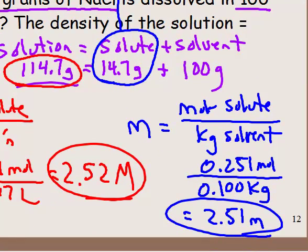Sometimes the molarity and the molality are going to be quite close — it depends on the moles, the volume, and how close the density is to 1. But there it is — that's one way.